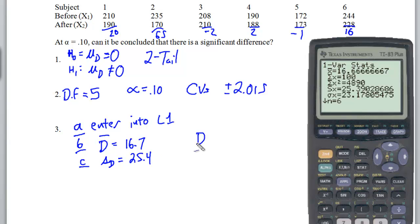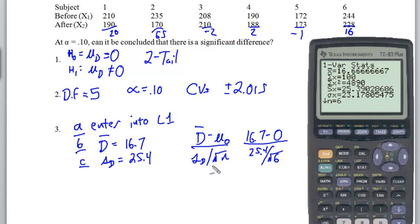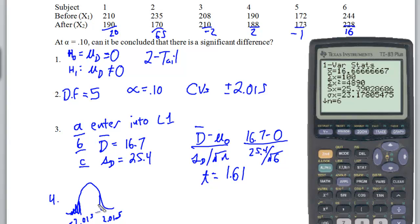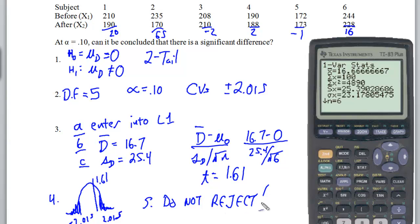Now we run the formula: D-bar minus mu sub zero, divided by S sub d divided by the square root of the sample size. So 16.7 minus 0, divided by 25.4 divided by the square root of 6, and we get a T score of 1.61. My step four: I had to be lower than negative 2.015 or higher than 2.015. I only got 1.61, so unfortunately I do not have enough information to reject the hypothesis. Step five: do not reject the null hypothesis.